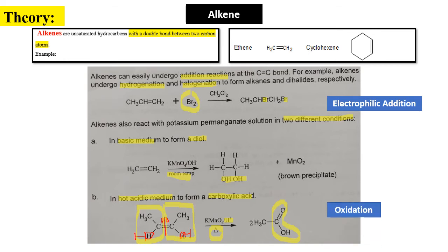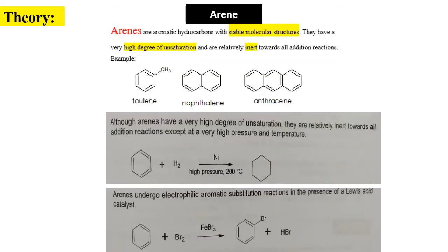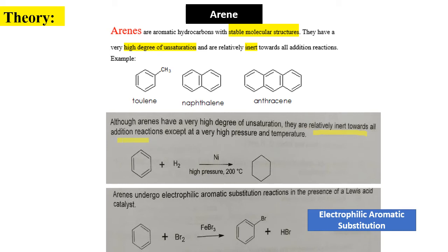Arenes are aromatic hydrocarbons with a stable molecular structure. They have a high degree of unsaturation and are relatively inert toward addition reactions. Examples include toluene, naphthalene, and anthracene — all containing a benzene ring. Although arenes have a very high degree of unsaturation, they are relatively inert toward addition reactions.